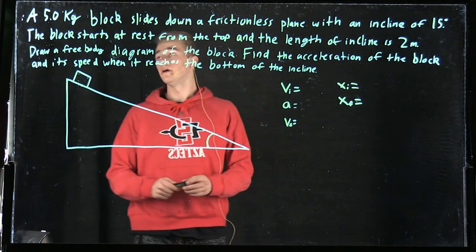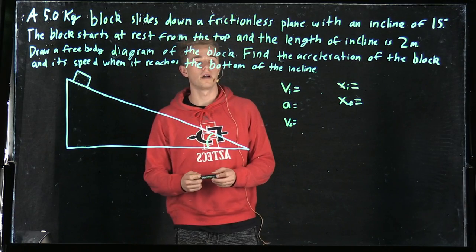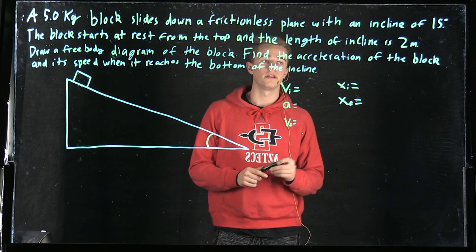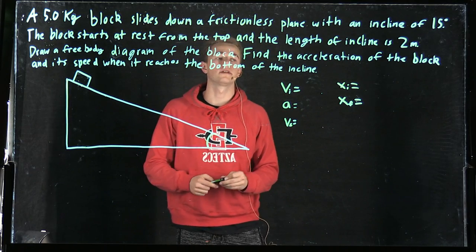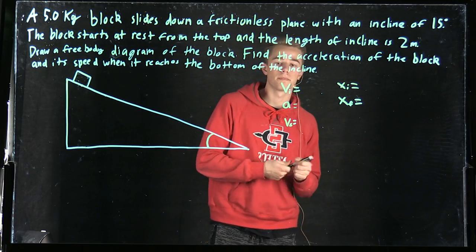I'm Matt Ross with group 30. We have a 5 kg block that slides down a frictionless plane with an incline of 15 degrees. The block starts at rest from the top and the length of the incline is 2 meters. We need to draw a free body diagram of the block, find the acceleration of the block, and its speed when it reaches the bottom of the incline.